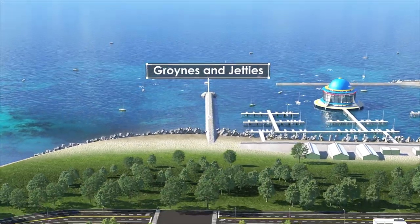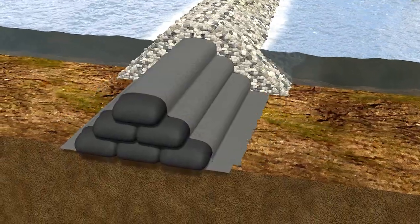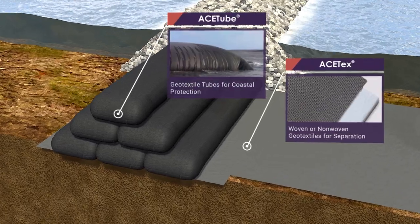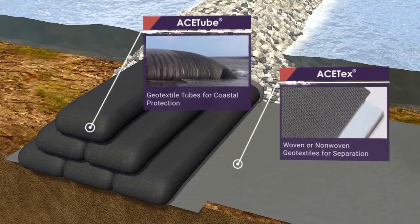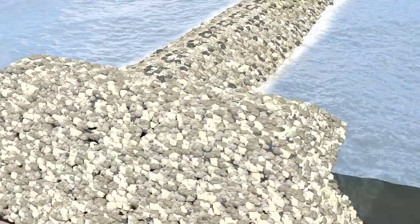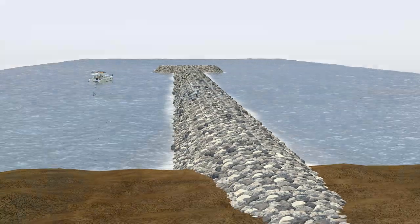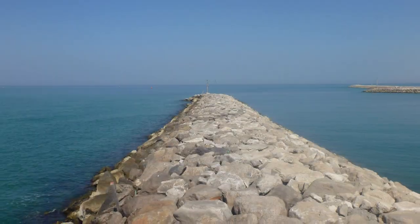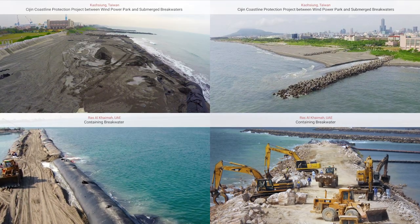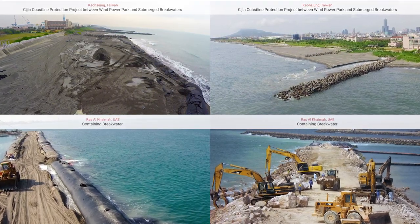Groins and Jetties: Groins built with ACE tube geotextile tubes can be constructed economically in a short period of time compared with traditional concrete structures. It can also decrease breakages or loss of rock fill due to differential settlement, providing an economical, long-lasting, and eco-friendly beach protection solution.